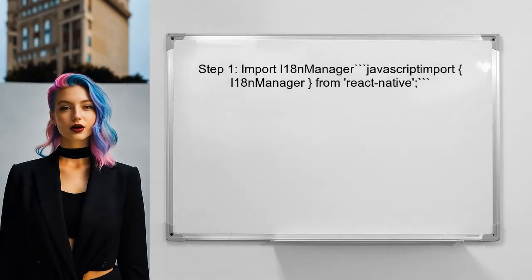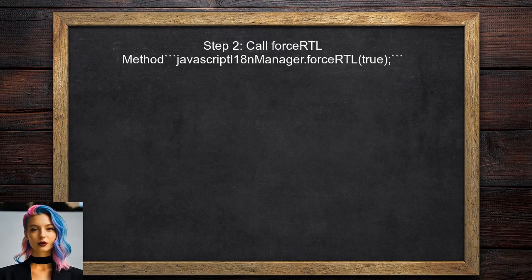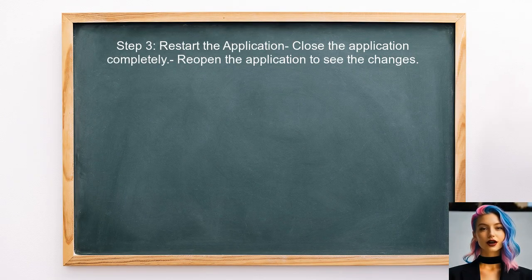To force right-to-left layout in your application, first ensure that the i18n Manager is imported from React Native — this is essential for managing internationalization settings. Next, call the forceRTL method. This should be done in the main entry point of the application, ideally before any components are rendered. After setting the layout direction, restart the application to apply the changes, as the layout direction is determined at start.